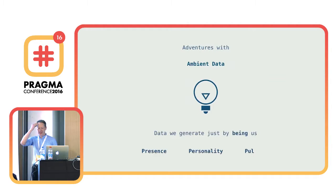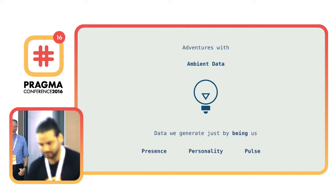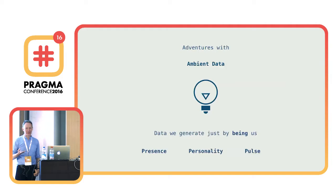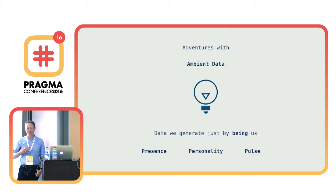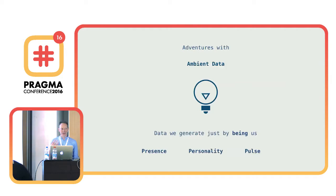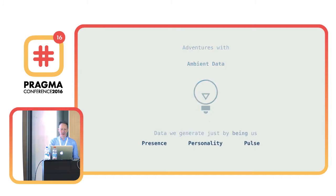So what is ambient data? For me, ambient data is all about the data that we create just by being people. There's a gold mine of information about us that we just generate in things like movement, our choice of words, the tone of words, when we get up, the route that we choose to take. There's lots of data that lives around us that isn't really being captured at the moment. My thesis is that it can really be injected into applications to make them more personal.